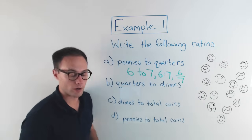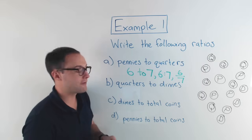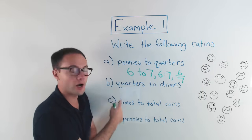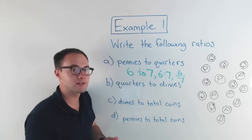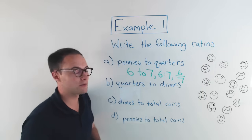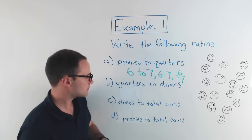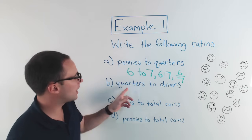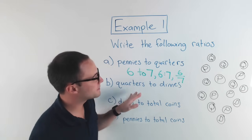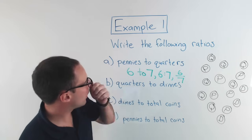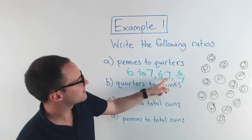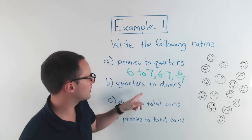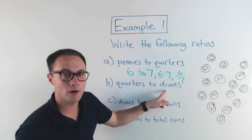Any one of those three would work. If you want to try the other parts on your own, go ahead and pause the video and give them a try. But let's move on. Quarters to dimes — same thing. I already know that there are seven quarters because we counted that before. Now I just need to know how many dimes.